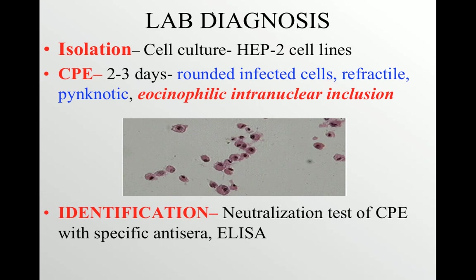The viruses get attached to specific receptors present on the cell, then penetrate and start multiplying within the cell, leading to formation of cytopathic effect. The cytopathic effect is the area where the virus is replicating. In the case of poliovirus, they produce rounded, pycnotic, eosinophilic intranuclear inclusions within the cells.